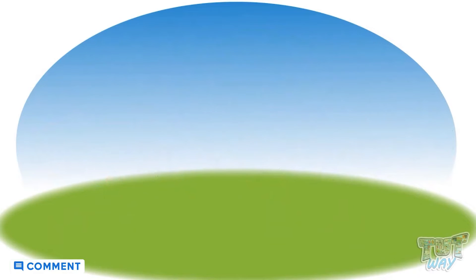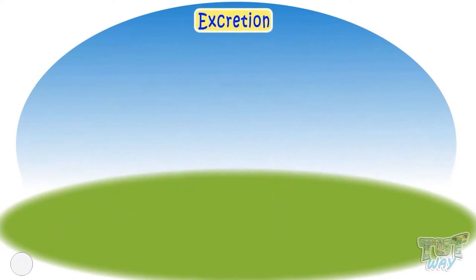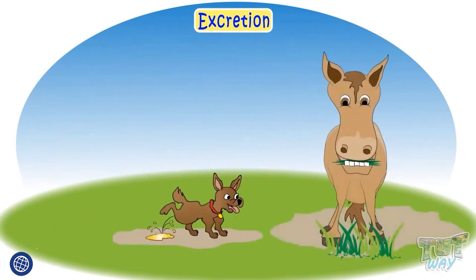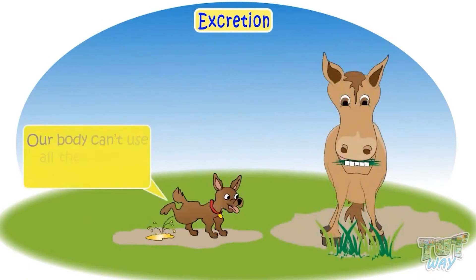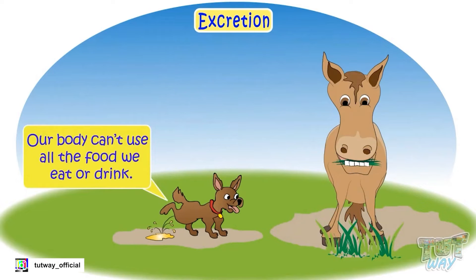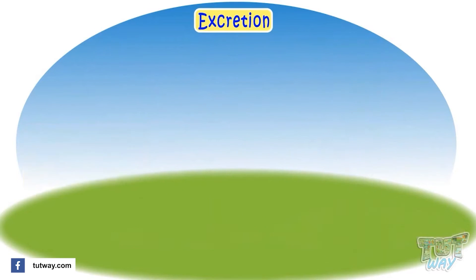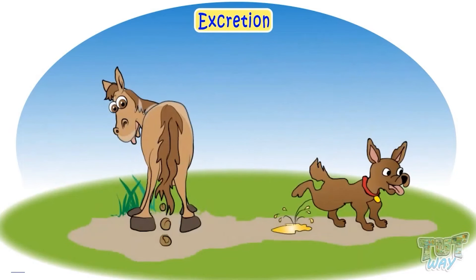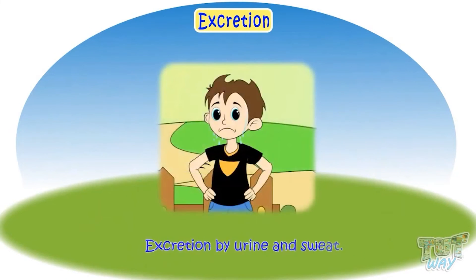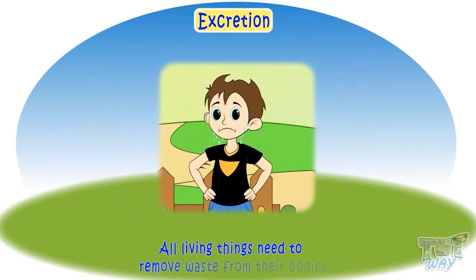Excretion is another important feature of all living things. Our body can't use all the food we eat or drink, so the part which is not used by our body is excreted out in the form of urine and sweat. All living things need to remove waste from their bodies.